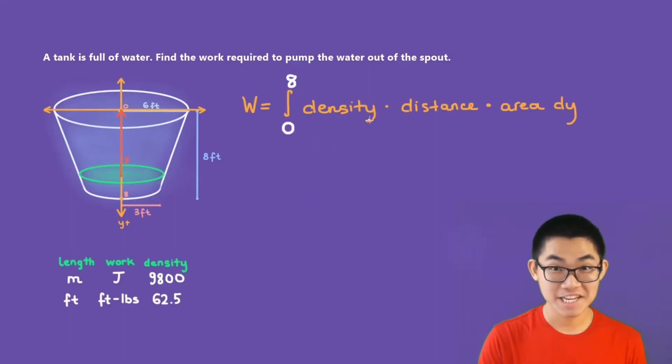How about the density? Well, according to this table, if the tank is measured in feet, in which case it does, then we need to use the density, which is 62.5, because the length is in feet. The density will be 62.5. The distance that we're pulling each layer of water is y, because we're pulling it to the top, so the distance will simply be y.